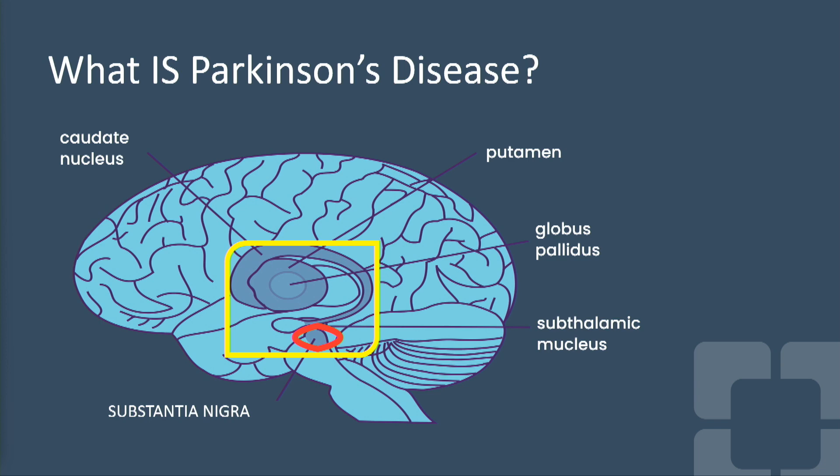That's where the brain cells are that produce dopamine. Dopamine is a chemical in your brain that is responsible for movement — initiating, modifying, and perfecting movement — and it also plays a role in emotional regulation. When we have Parkinson's disease, there's a loss of those neurons or brain cells in the substantia nigra, which causes the symptoms of Parkinson's.